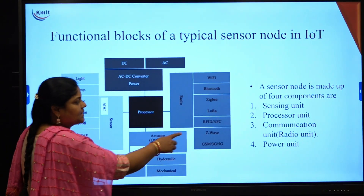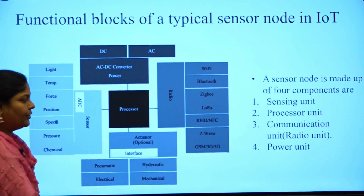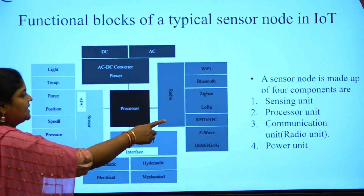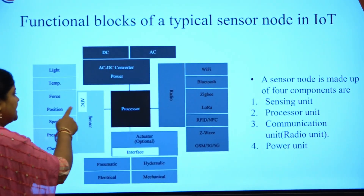The four main components are: sensing unit, processing unit, communication or radio unit, and power unit. We will now look at the functionality of each one.